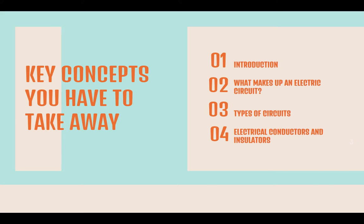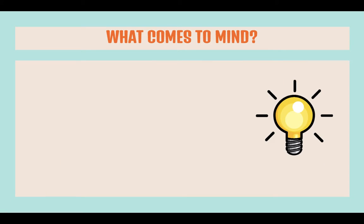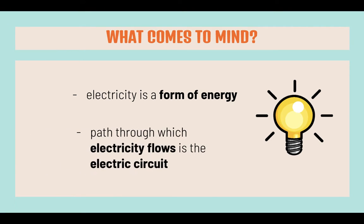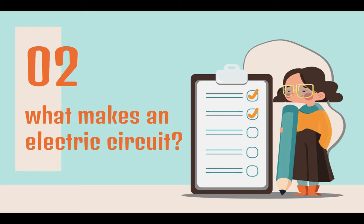Firstly, what comes to mind when you mention the word electricity? Electricity is a form of energy. The path through which electricity flows is the electric circuit. With regards to an electric circuit, what are the components that make up the electric circuit?